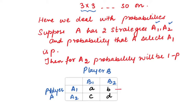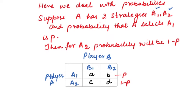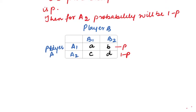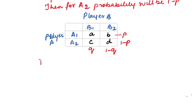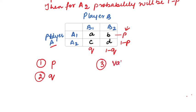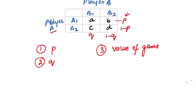If player A selects strategy A1 with probability P, then since total probability is 1, the probability of selecting strategy A2 will be 1 minus P. Similarly, if player B selects B1 with probability Q, then for B2 it will be 1 minus Q. We need to find the values of P and Q, and the strategies depend upon these probabilities.